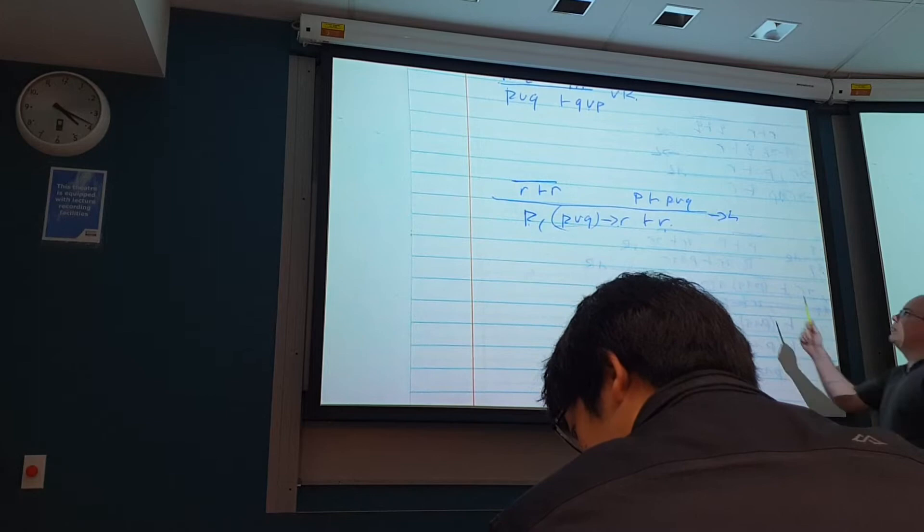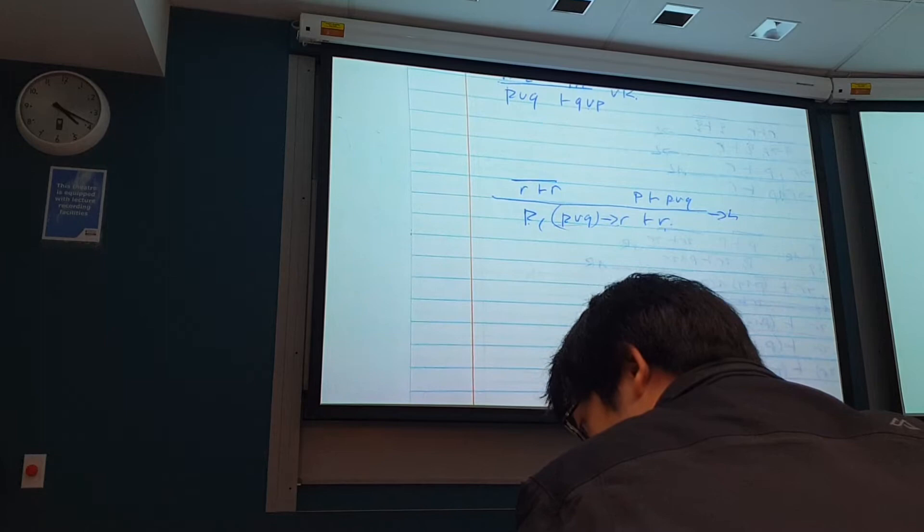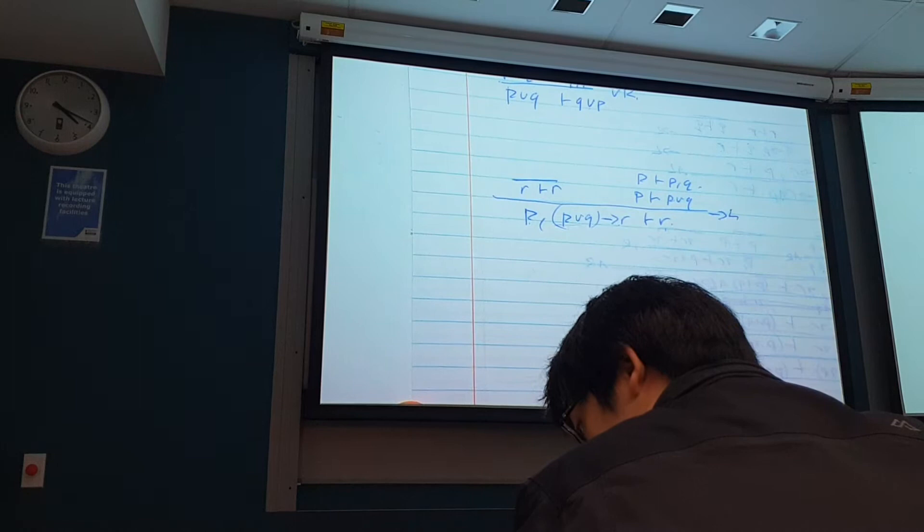there's two moves we can do now. We can just do disjunction on the right. And if you do that, you're going to get P, therefore P, comma Q. That's disjunction on the right.